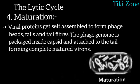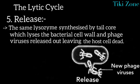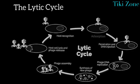The last stage of the lytic cycle is the release of newly formed phage viruses. The same lysozyme enzyme, synthesized by the tail core, lyses the bacterial cell wall again, and the phage viruses are released, leaving the host cell dead. In this process, E. coli bacteria are used by T4 phage viruses to multiply their number, and in the last stage the host bacteria are killed.